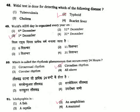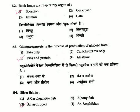Question 51: Ichthyophis is — Ichthyophis is an amphibian. Option 2. Question 52: Book lungs are respiratory organs of — book lungs belong to scorpions. Correct answer is Option 1. Question 53: Gluconeogenesis is the process of production of glucose from — gluconeogenesis is glucose formation from fats and proteins. Correct answer is Option 3.